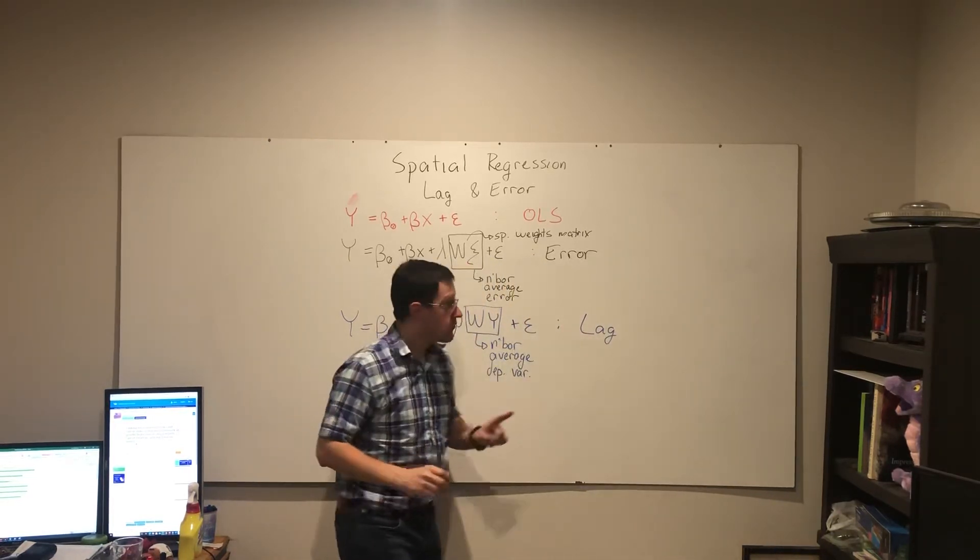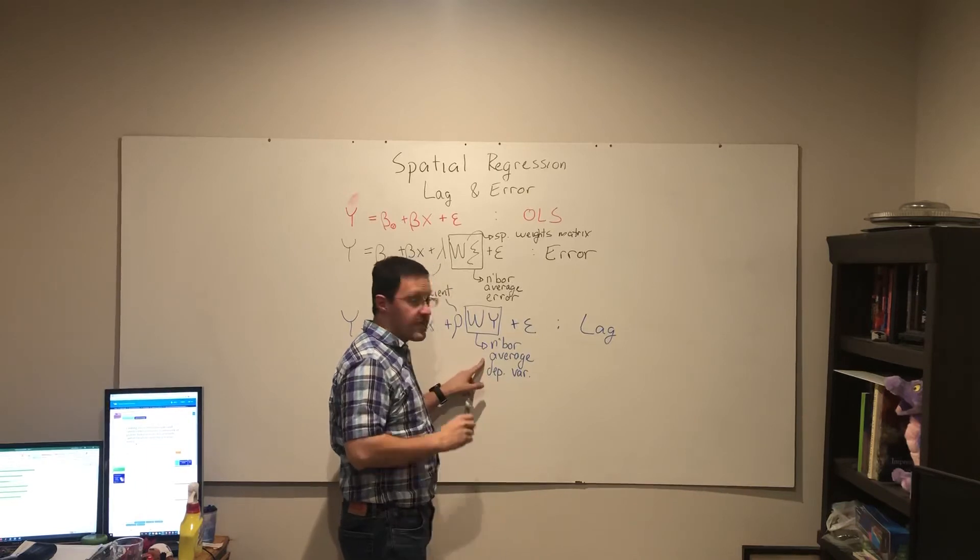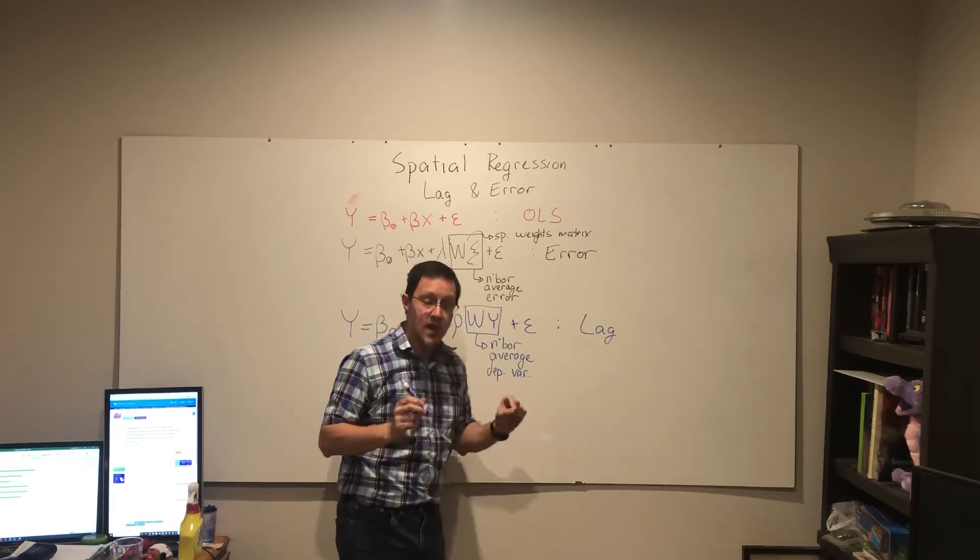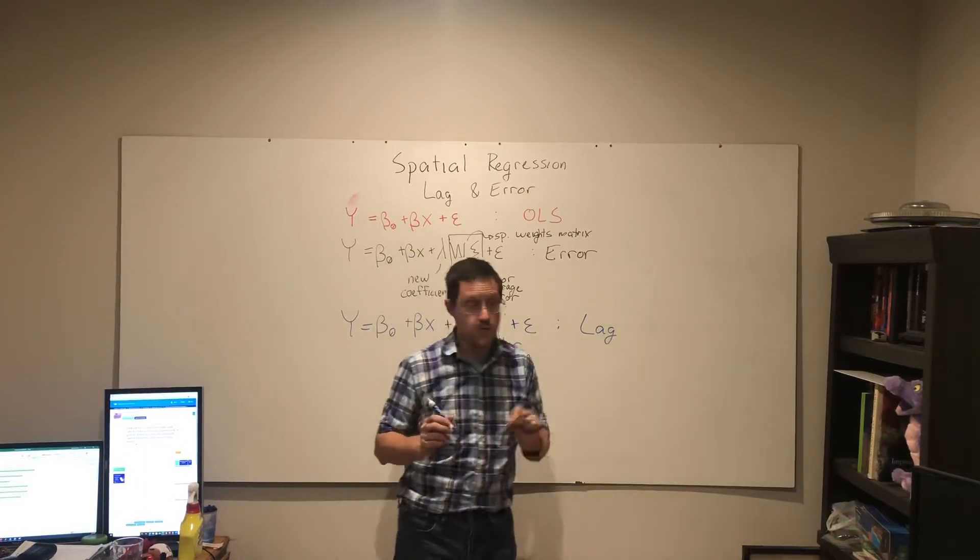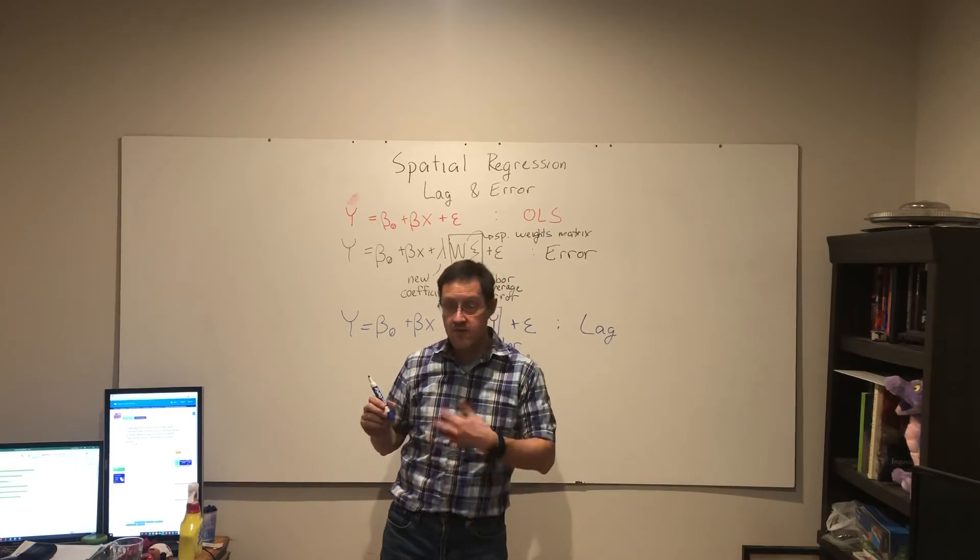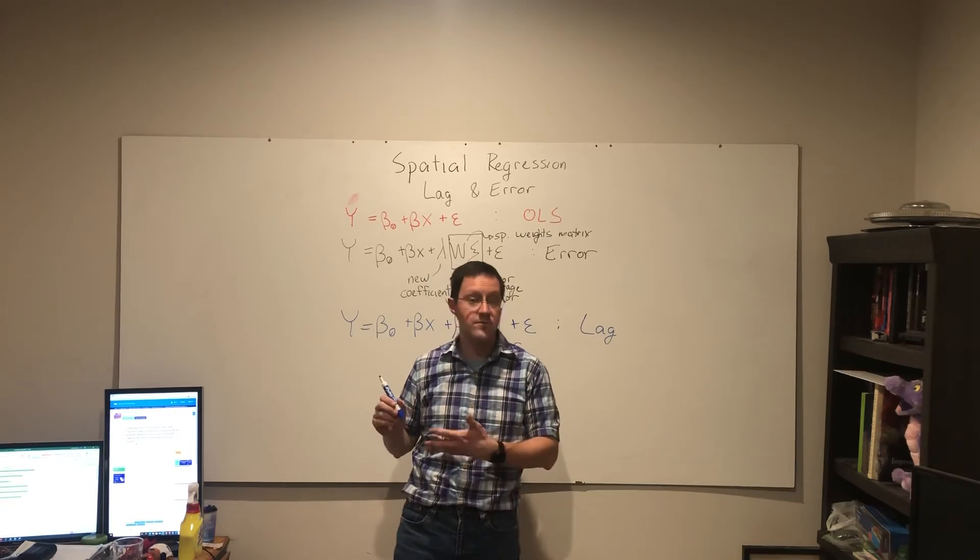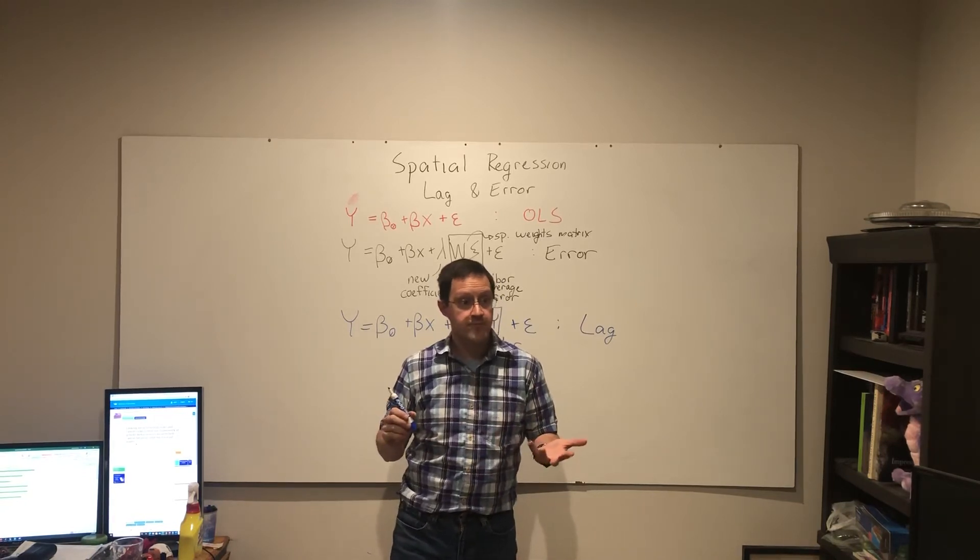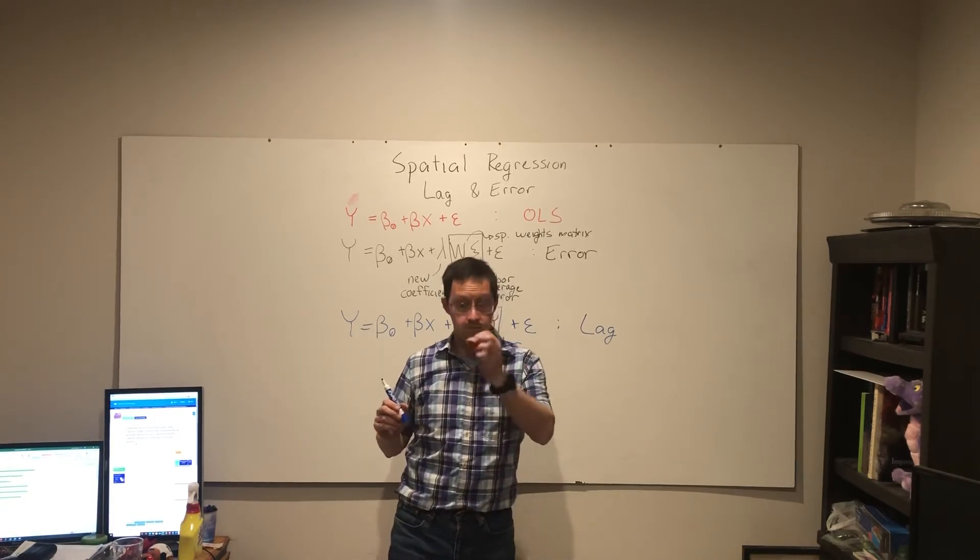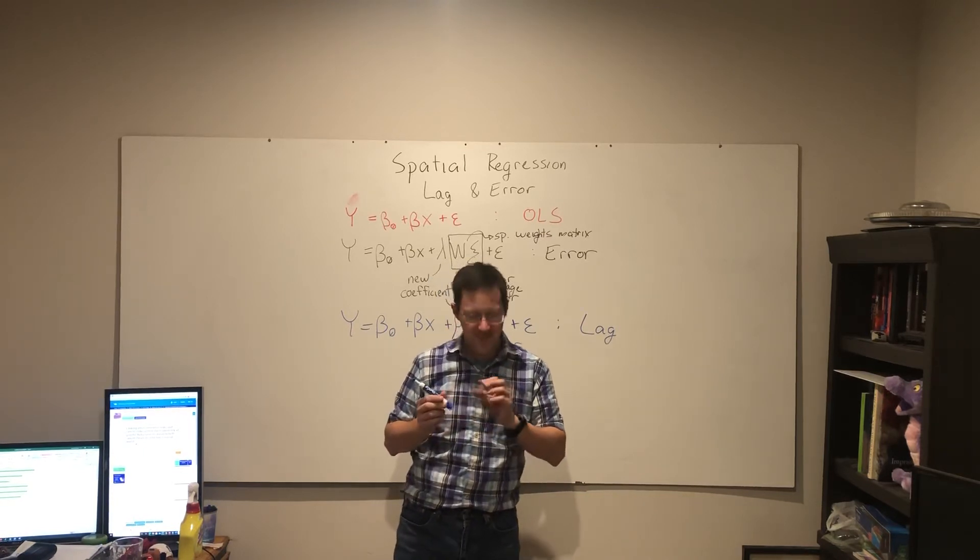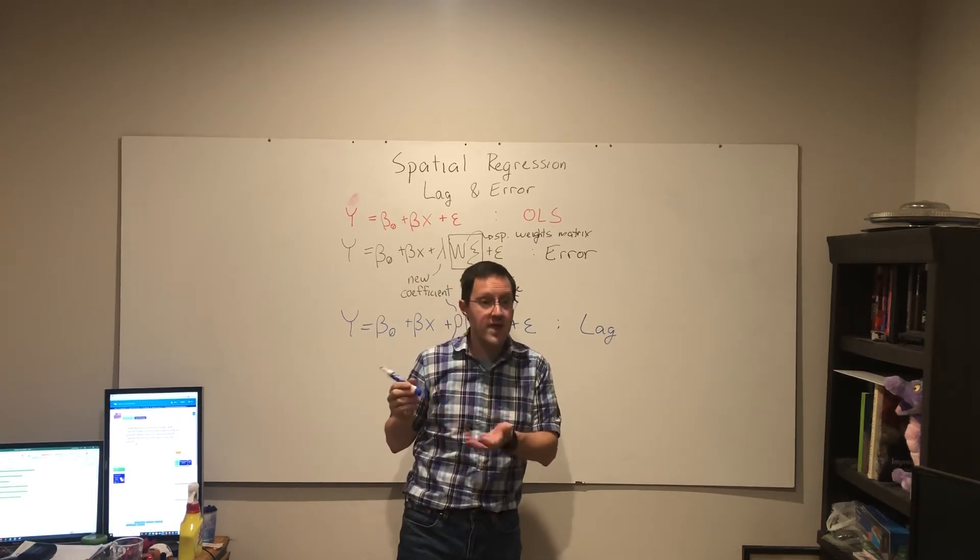So the spatial lag regression here is saying now my COVID rate for Mon County, still a function of mask compliance in Mon County, there's still the underlying base rate that would be from the intercept, which again we may or may not interpret.